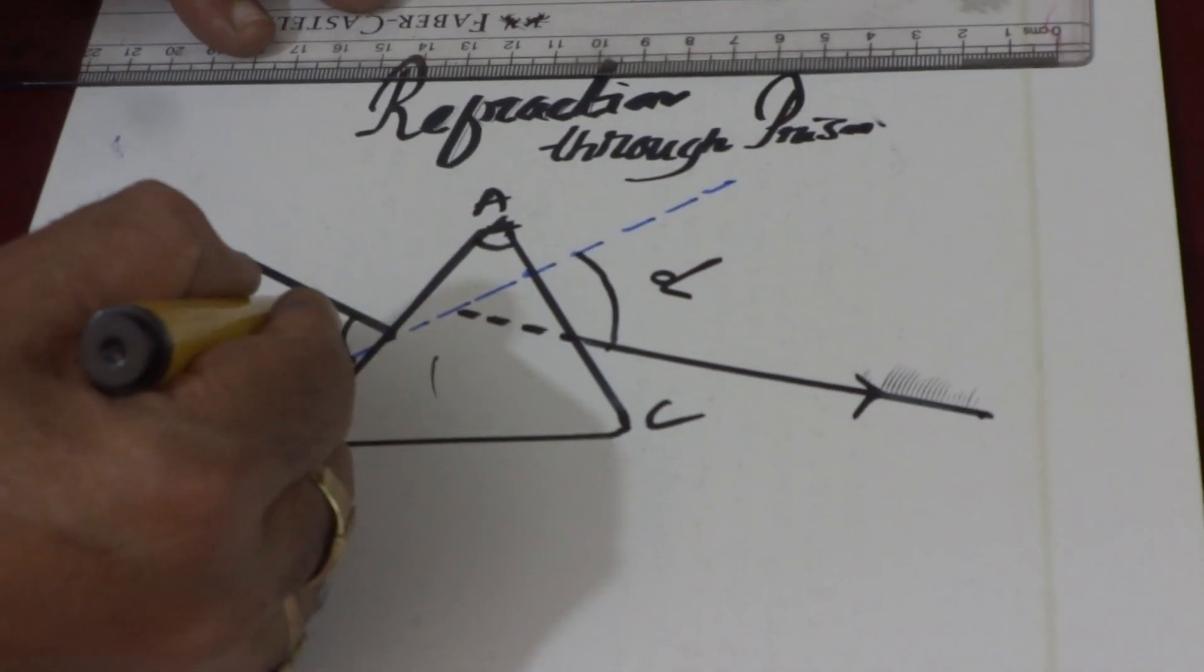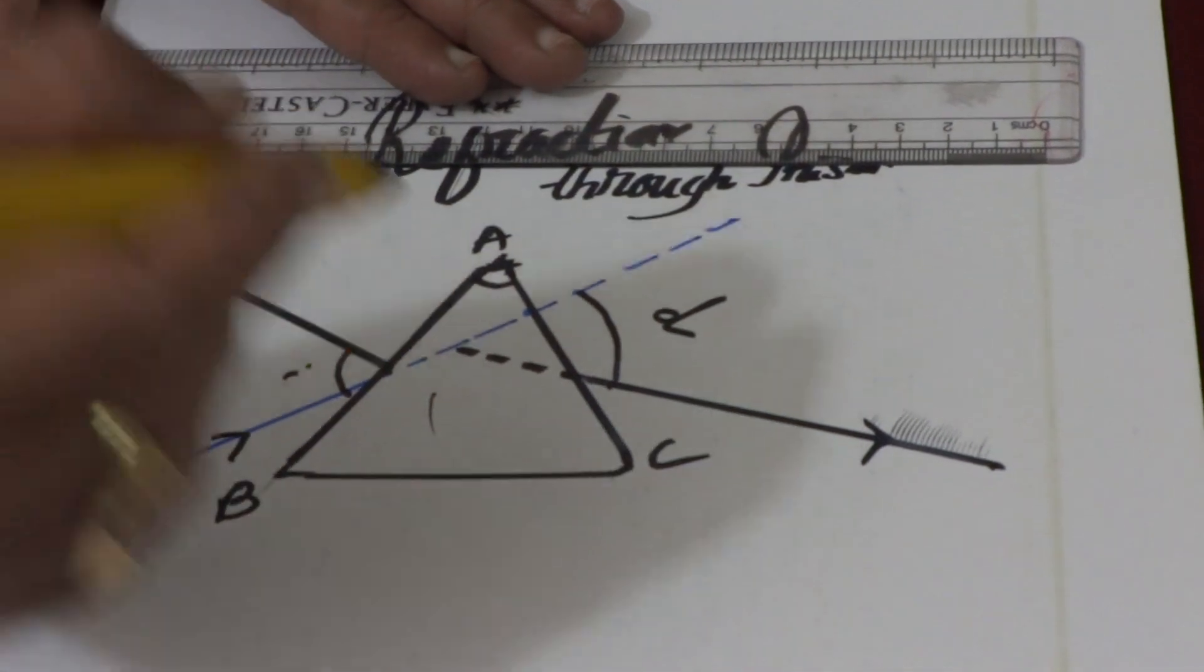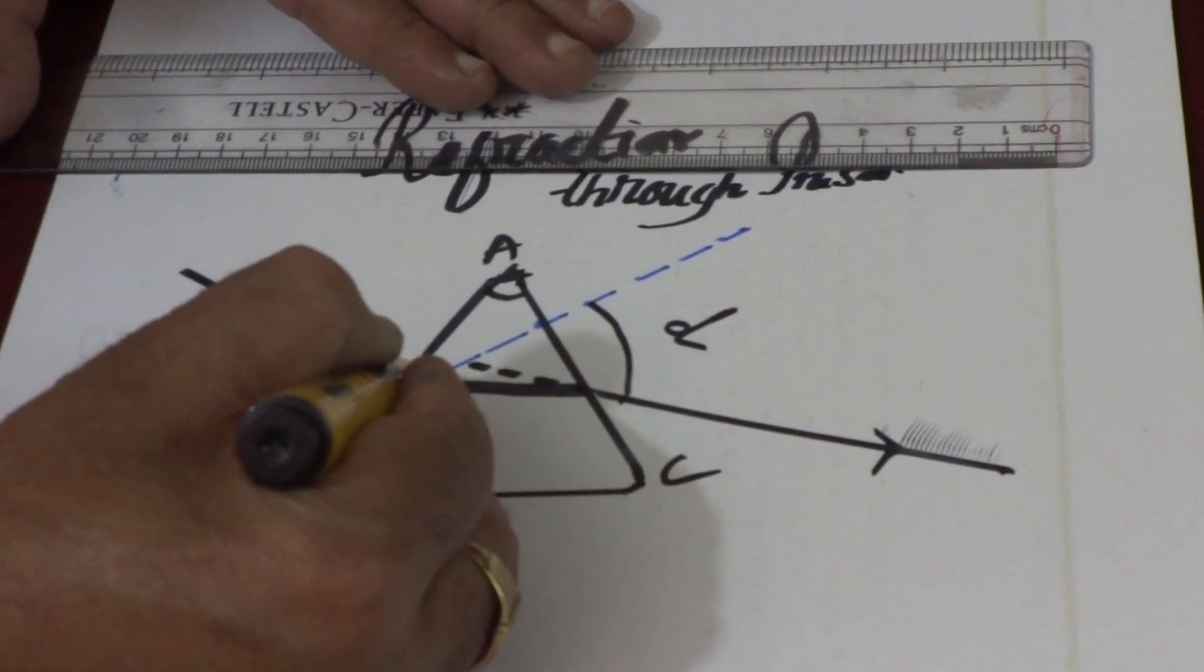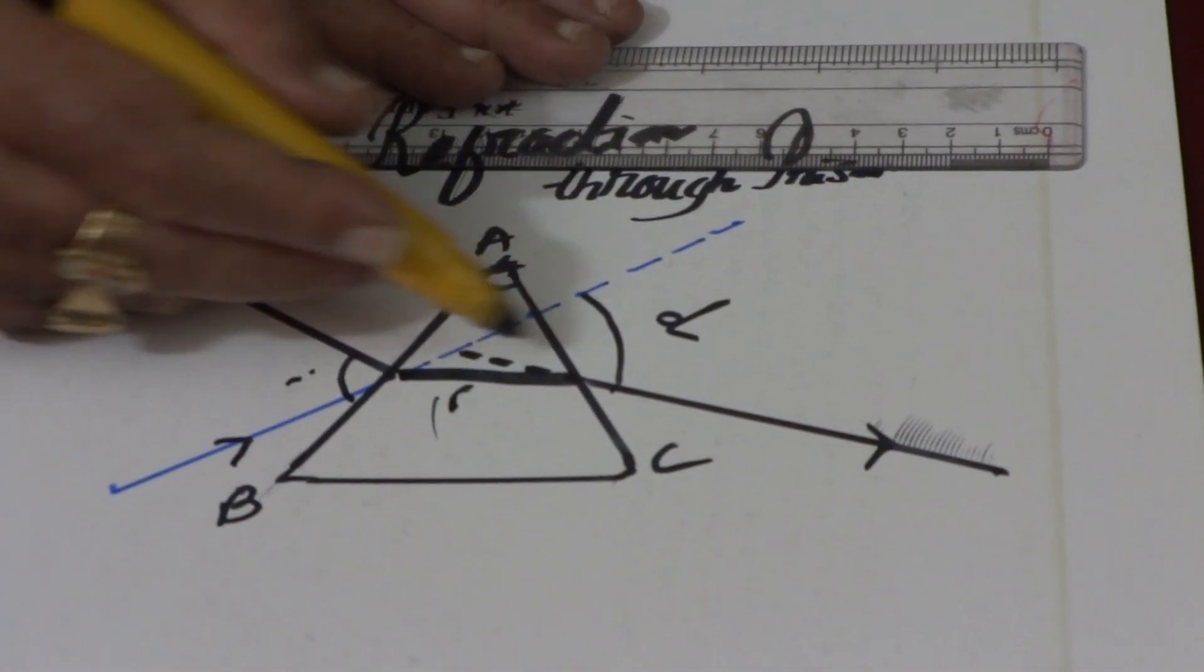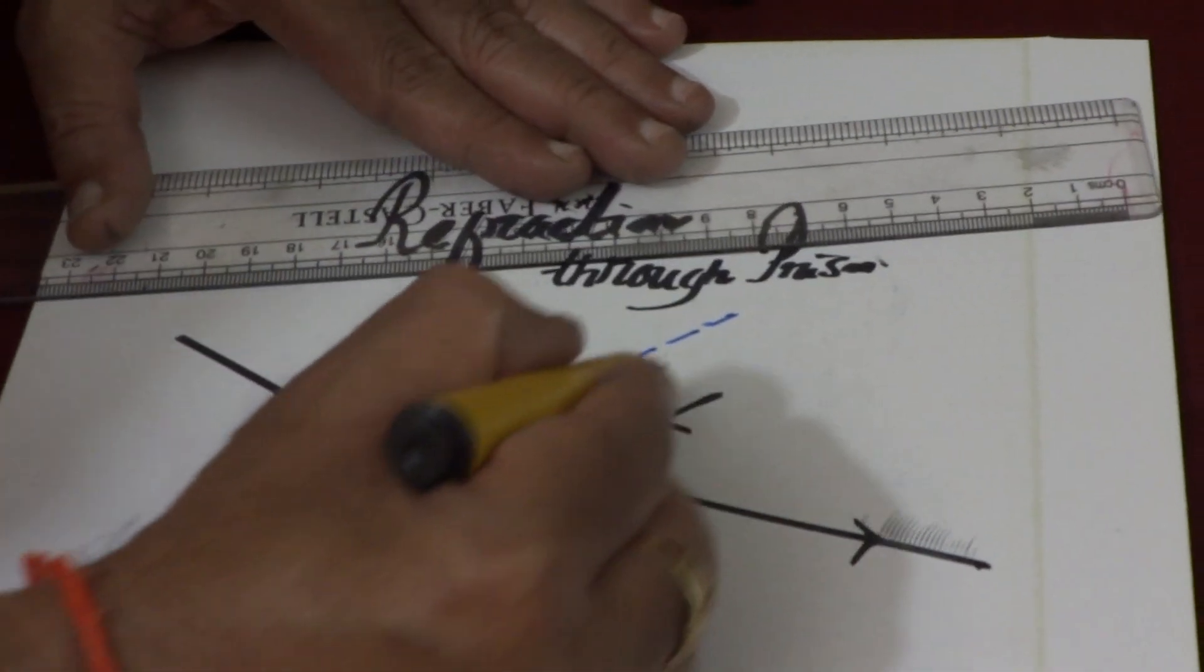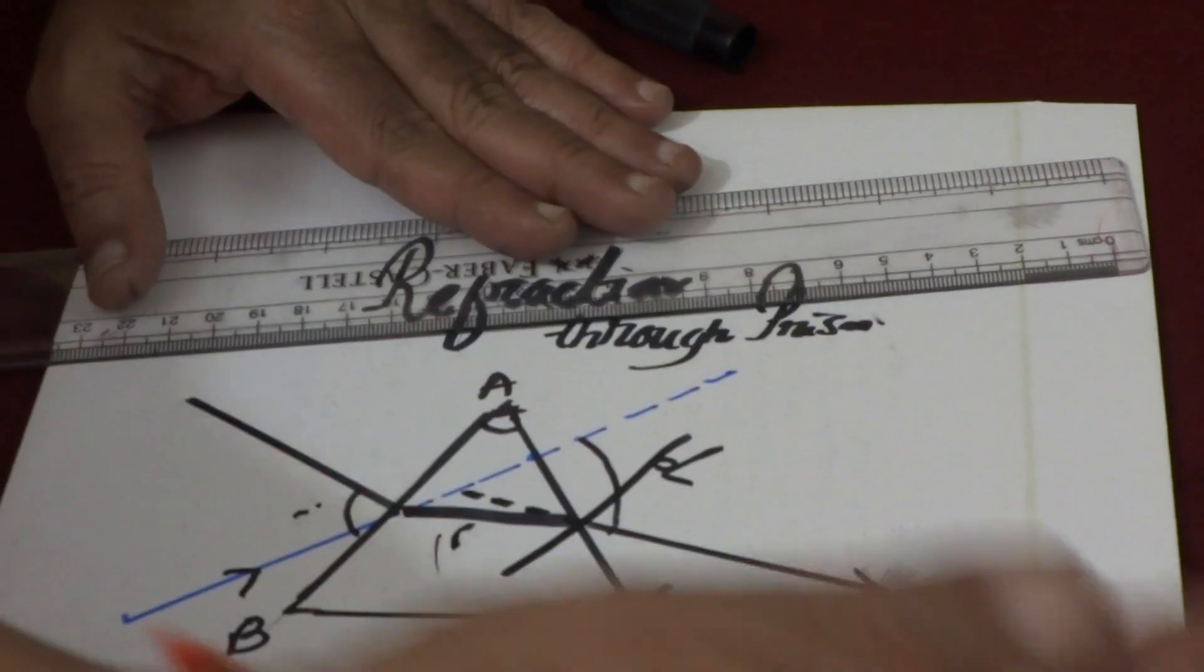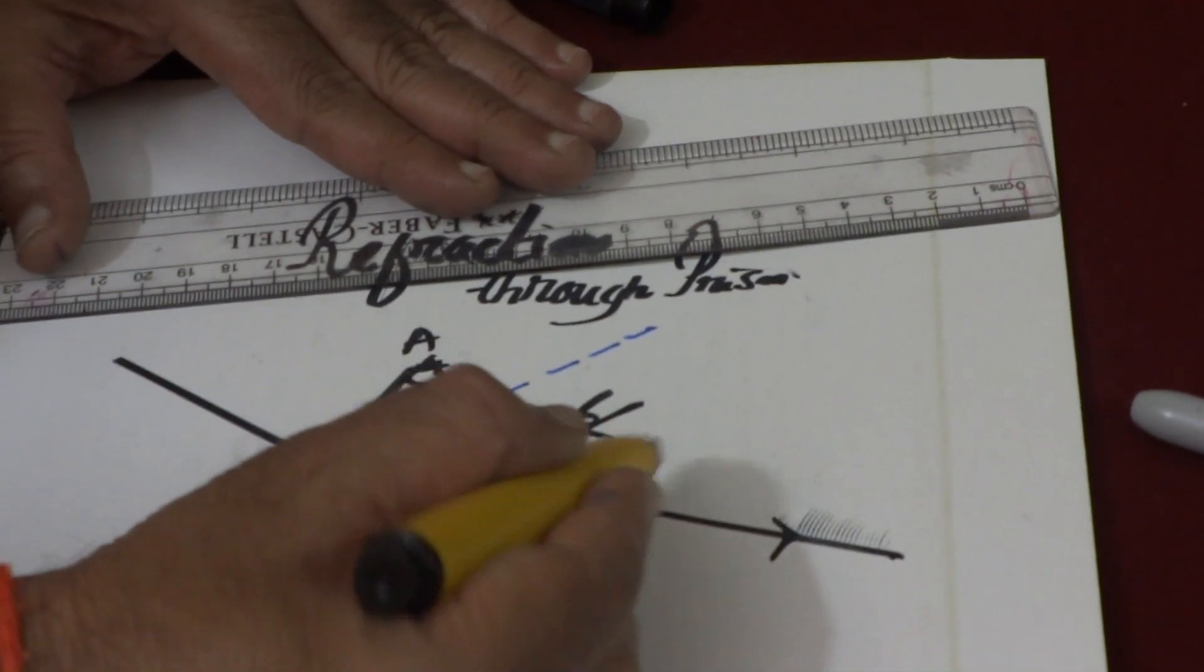This is angle of incidence. And if I join these two, this represents the refracted ray within the prism. And then finally, if I draw one normal here, as it is entering into the rarer medium, it moves away from the normal. This angle is called angle of emergence.